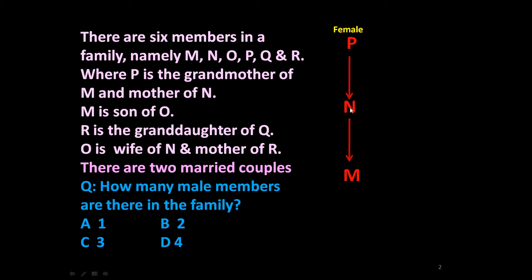Since M is son of O, N and O form one couple. M is a male member, but whether N is the father or O is the father is not yet clear from this statement alone. The next statement is: R is the granddaughter of Q.